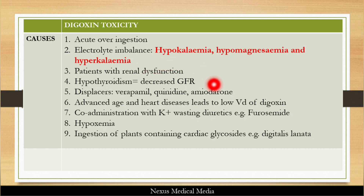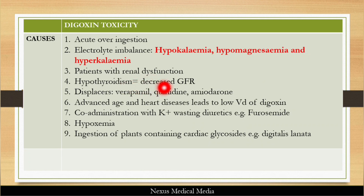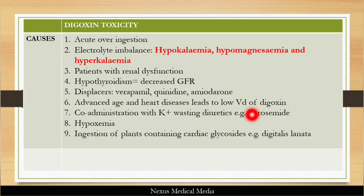Other causes include patients with renal dysfunction and hypothyroidism, because hypothyroidism leads to decreased glomerular filtration rate. Drugs that displace digoxin from albumin — such as verapamil, quinidine, and amiodarone — as well as advanced age and heart disease, lead to low volume distribution of digoxin.